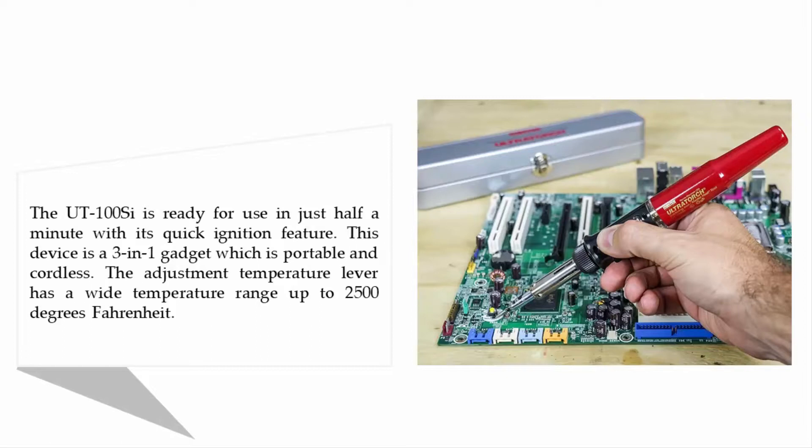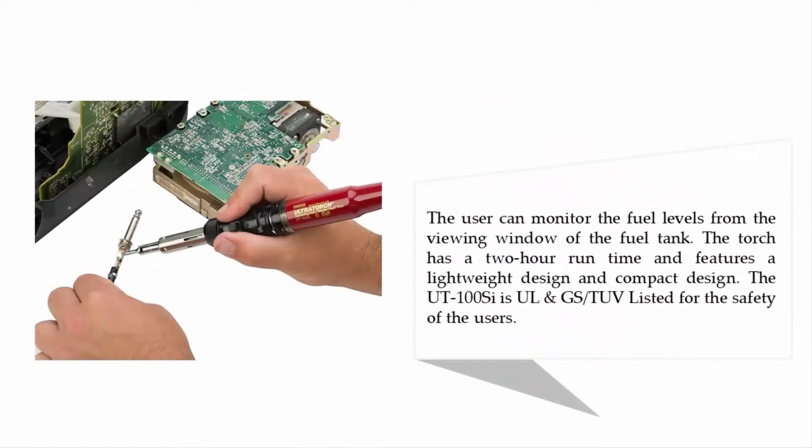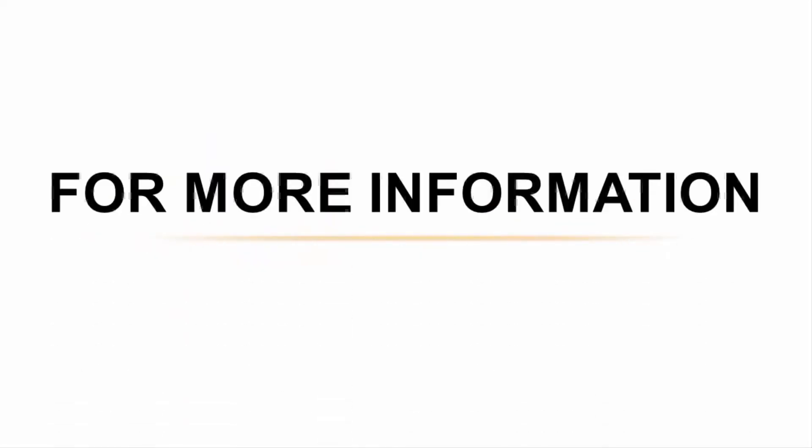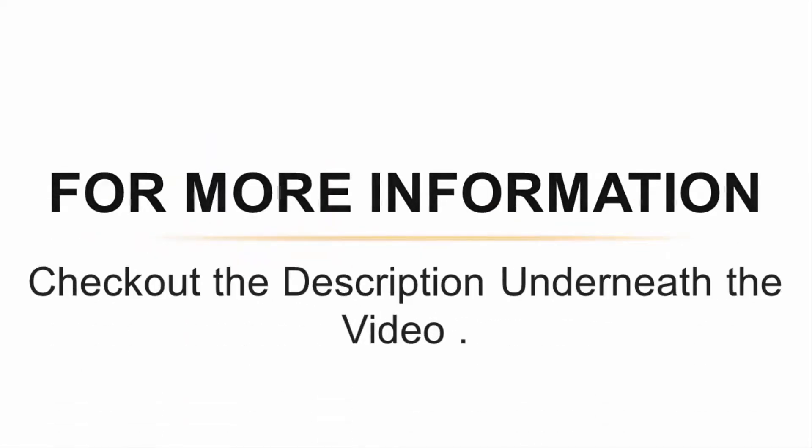The user can monitor the fuel levels from the viewing window of the fuel tank. The torch has a two-hour runtime and features a lightweight and compact design. The UT 100C is UL and GS TUV listed for the safety of the users. For more information check out the description underneath the video.